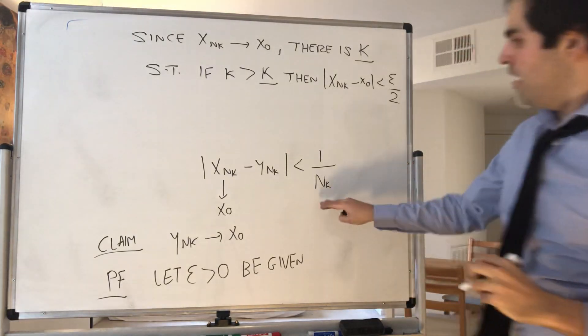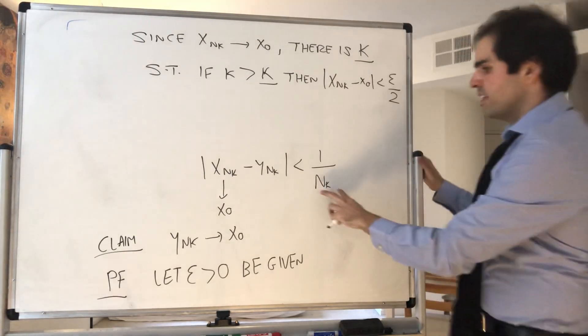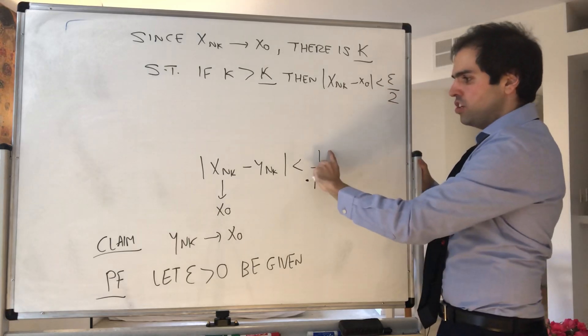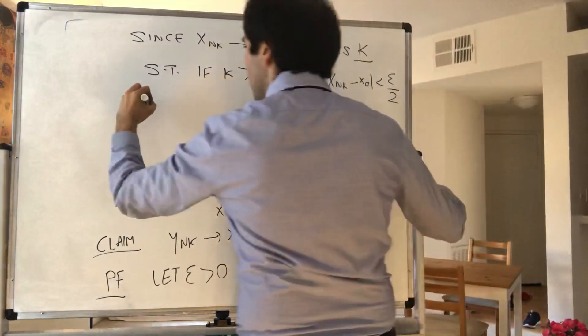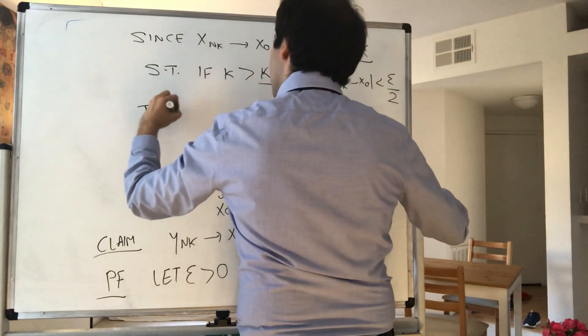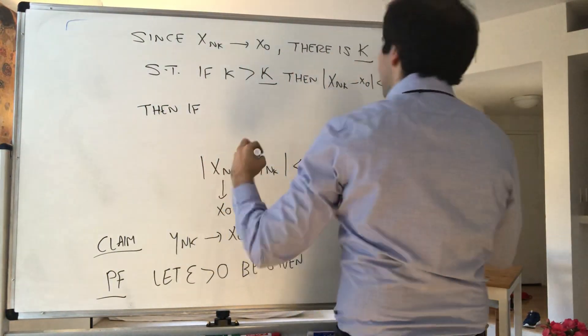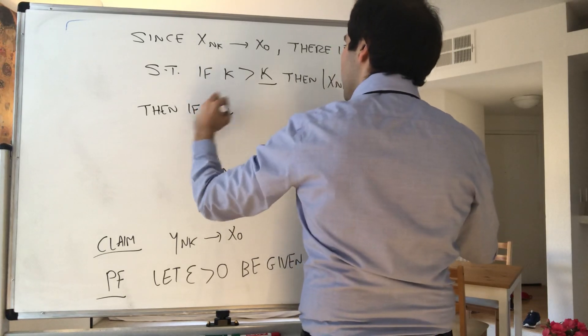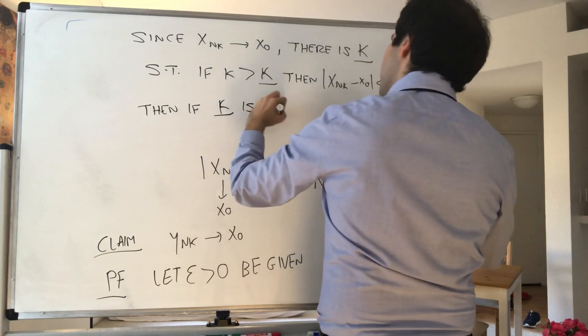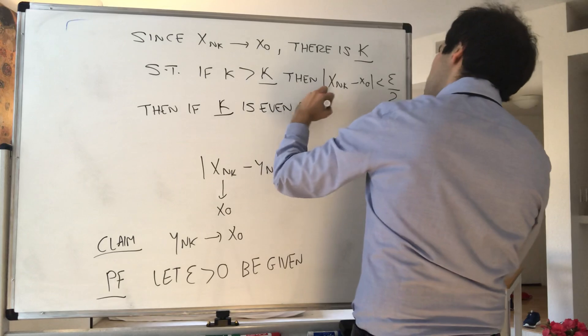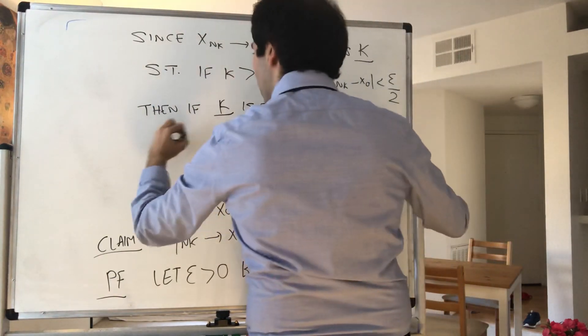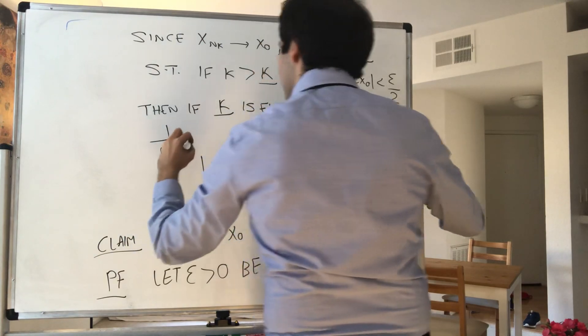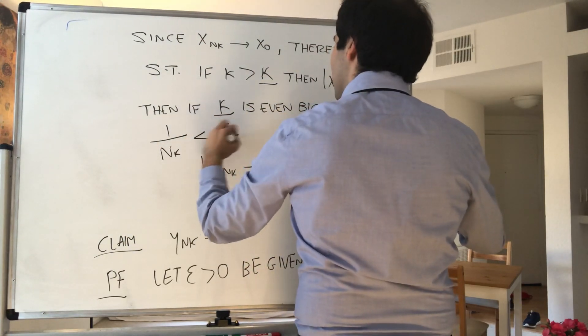And moreover, if you choose k even bigger, such that this becomes less than ε/2, then if capital K is even bigger, such that 1/nₖ < ε/2.